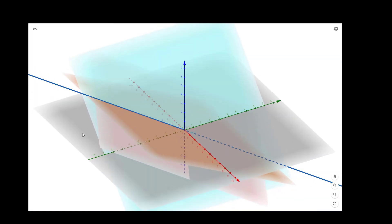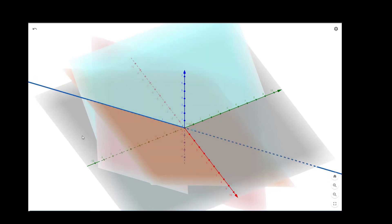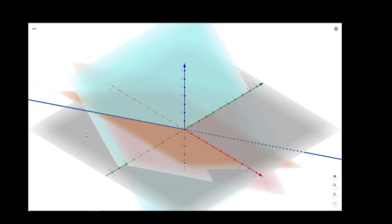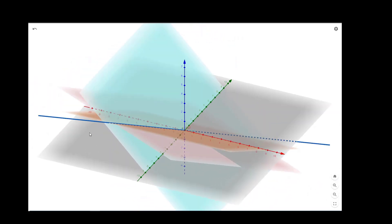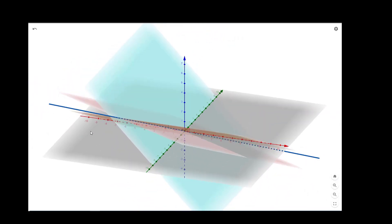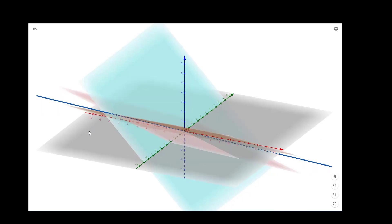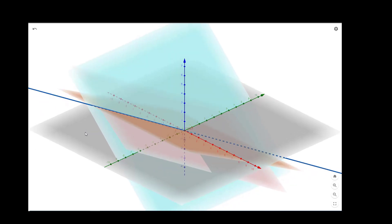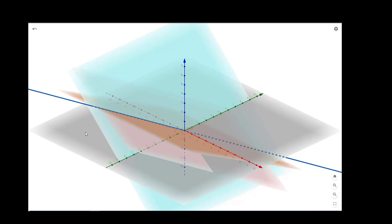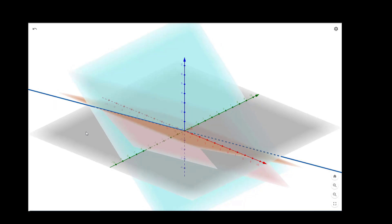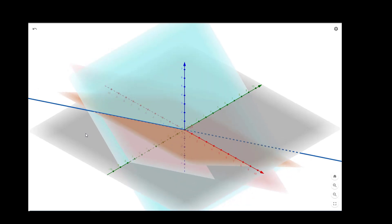This straight line is a vector space, and it is actually the null space of the matrix A, which is also the solution space of this system of three linear equations. It is a one-dimensional vector space — a straight line represented by (-t, -2t, t) where t is any real number. Thank you.